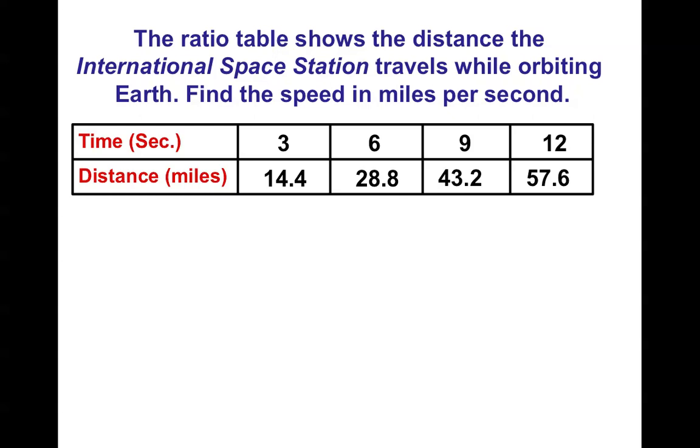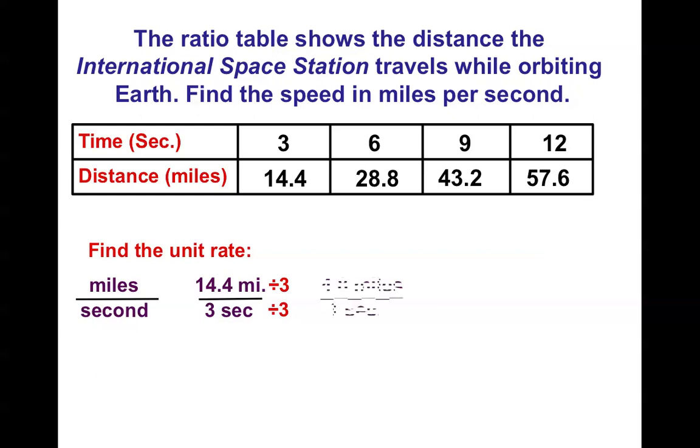All right, here's another chart. This is the time and the distance traveled by the space station, and I'm going to give you a clue if I want it in miles per second. All right, I'm back. Let's say I pick the smallest numbers. I divide by 3 and divide by 3 because I need my 1 to be in my denominator for my unit rate. And I am getting 4.8 miles every one second. That's moving.